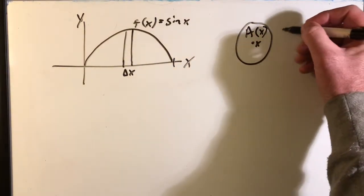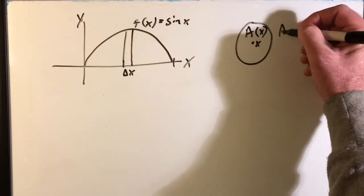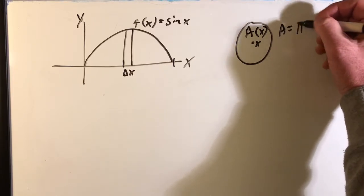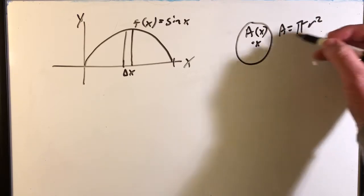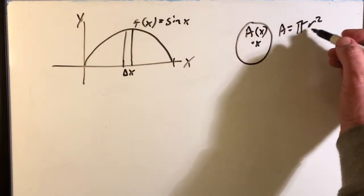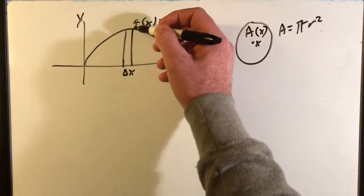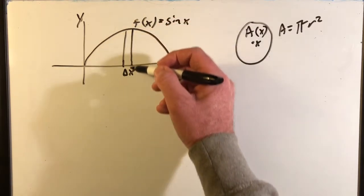So you want area as a function of x. So in that case, you are always going to have area equal to pi r squared.